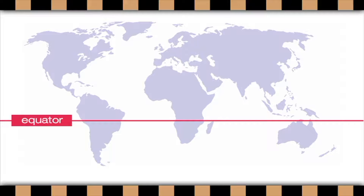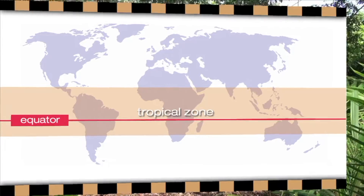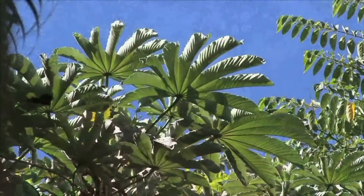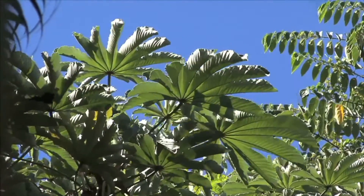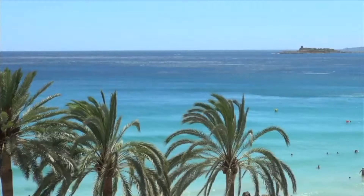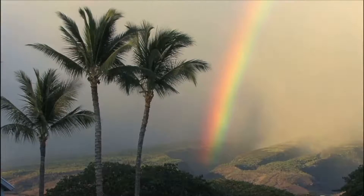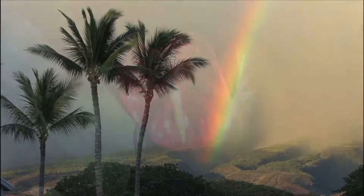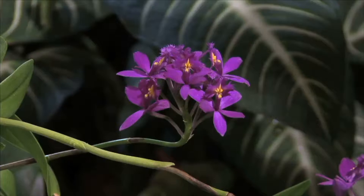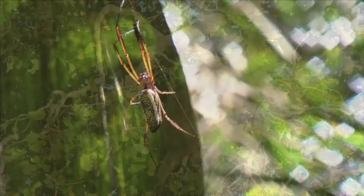A tropical climate is located just north and south of the equator, known as the tropical zone. The tropical zone is hot and doesn't have winter. Because of its location, tropical zones receive direct sunlight all year long. Regions of the world with a tropical climate have hot temperatures all year long. Many tropical areas have humid and wet environments. There are more species of plants found in tropical climates than anywhere else on Earth, and also a wide variety of animals both large and small.